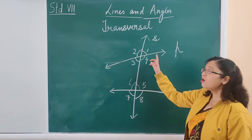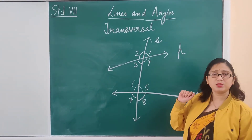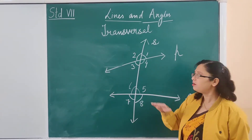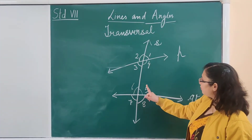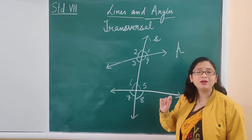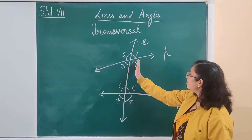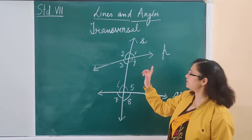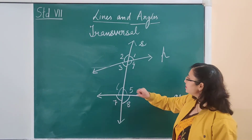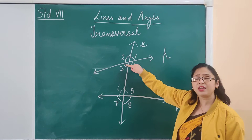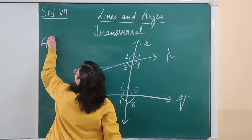The next type of angles are alternate interior angles. The interior angles are angle 3, angle 4, angle 5, and angle 6. Alternate interior angles means interior angles which are on alternate sides of the transversal. So angle 4 and angle 6 are alternate interior angles, and angle 3 and angle 5 are also alternate interior angles.